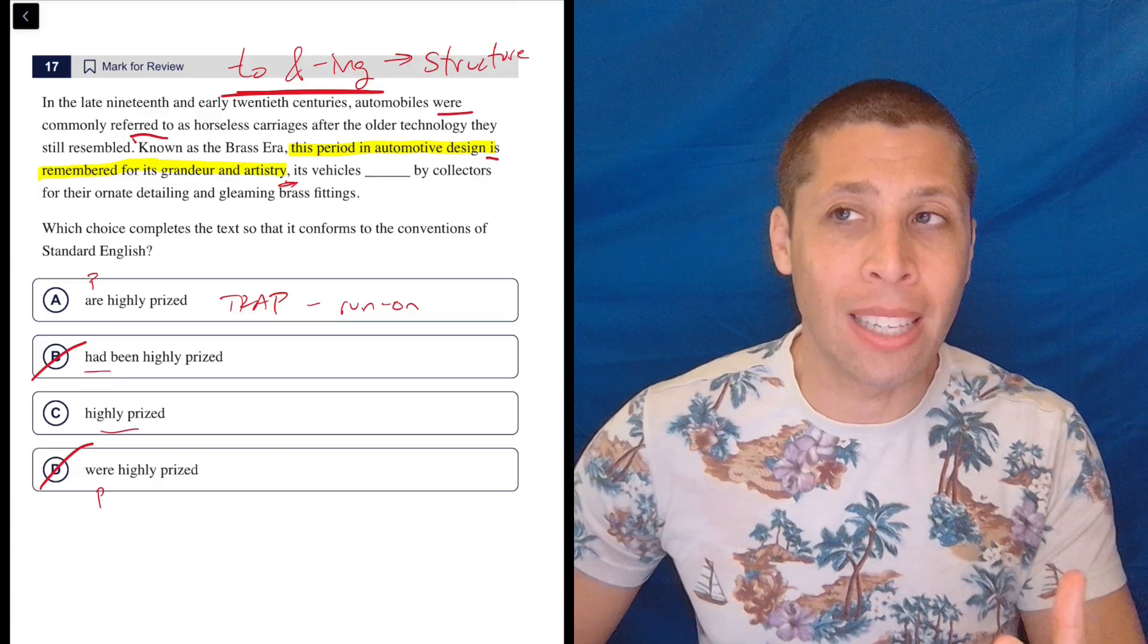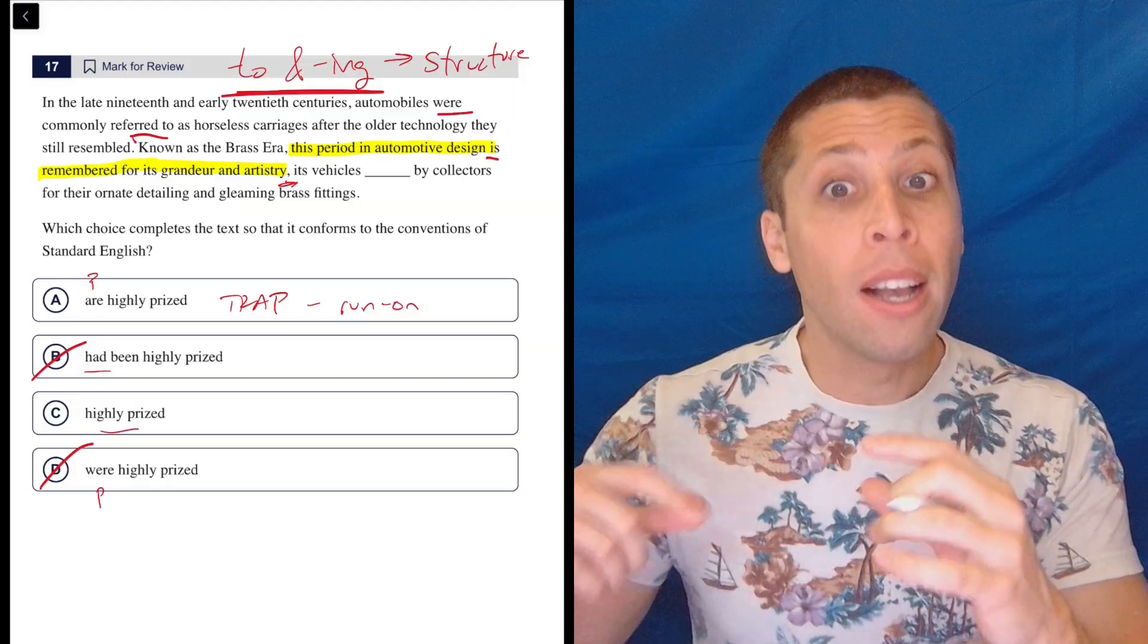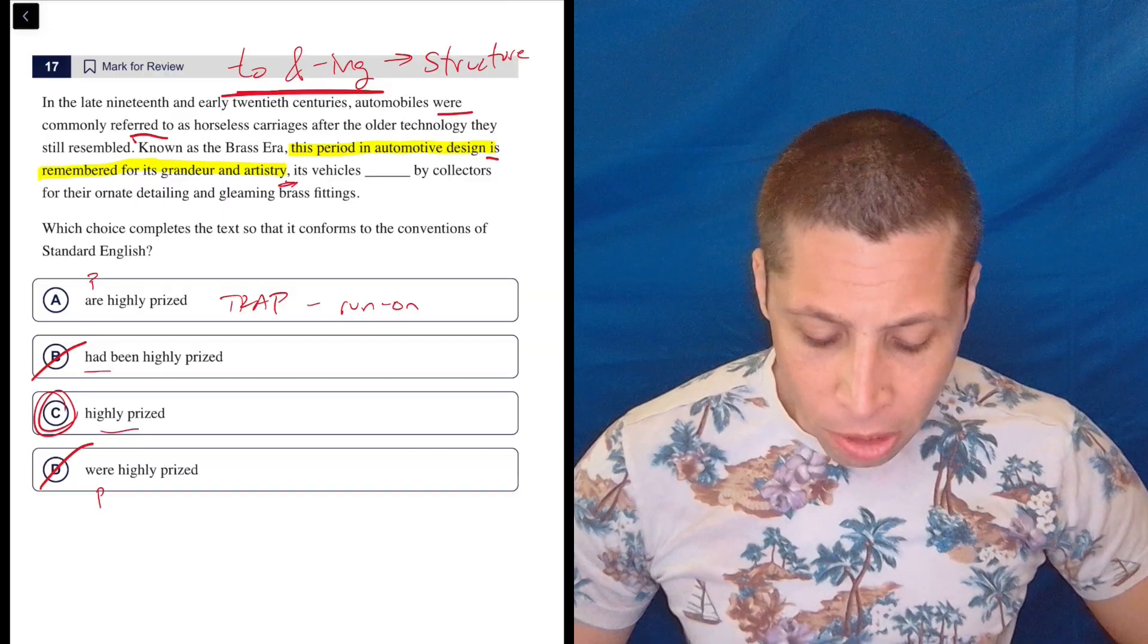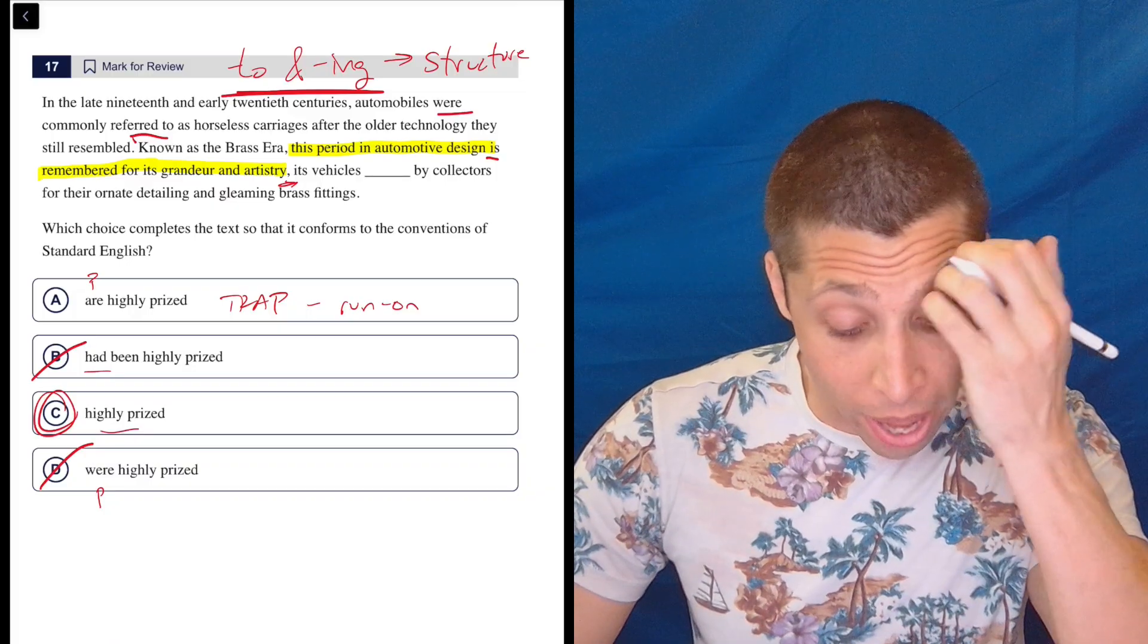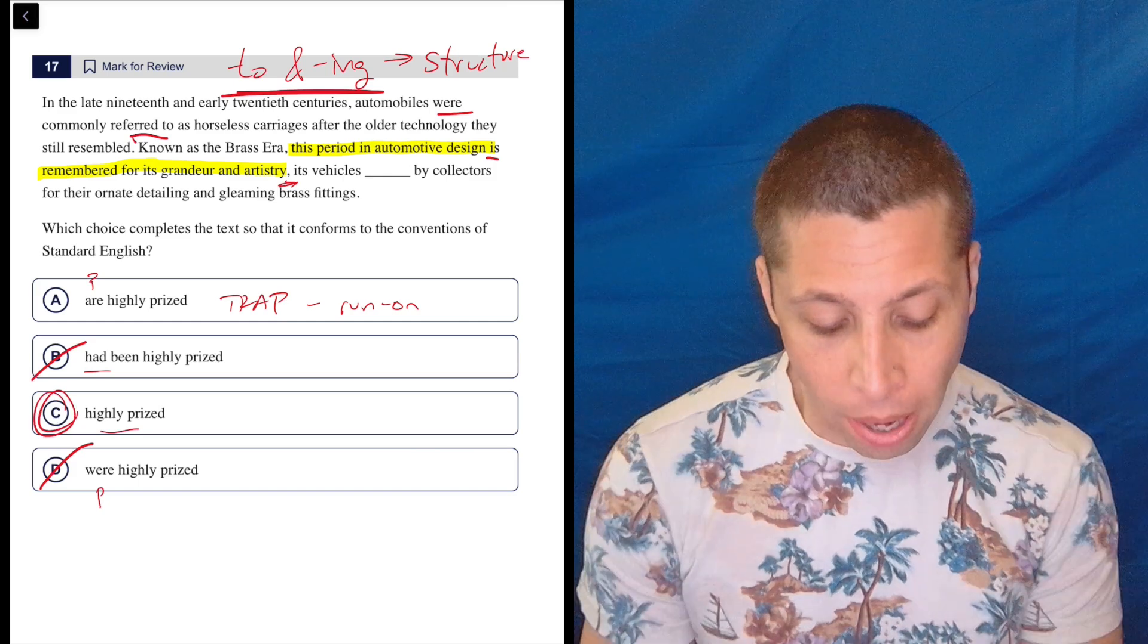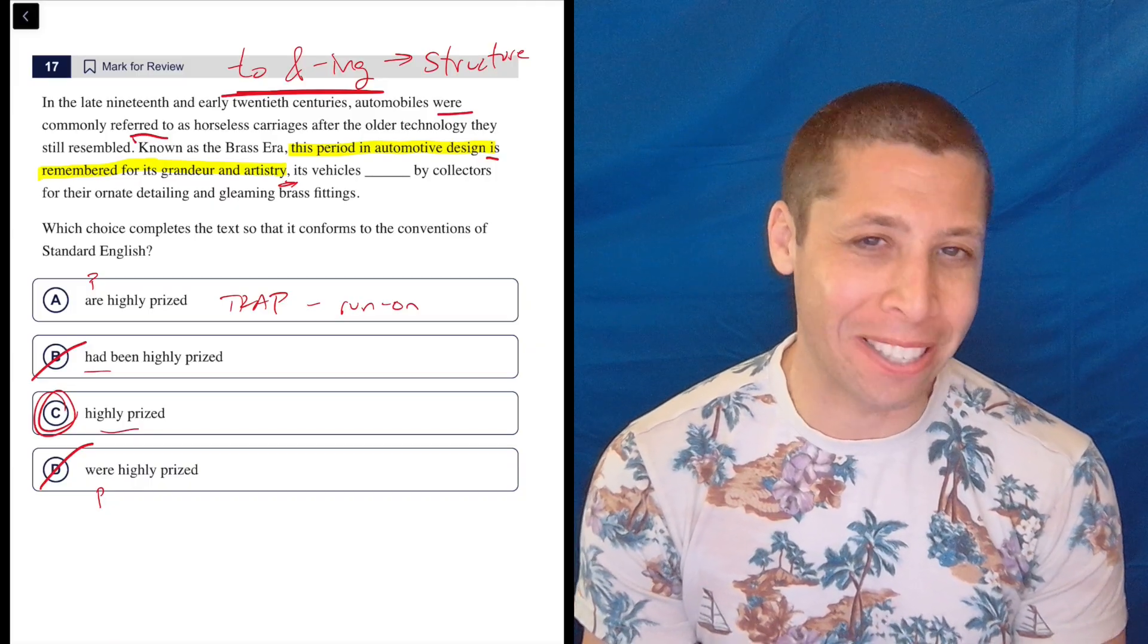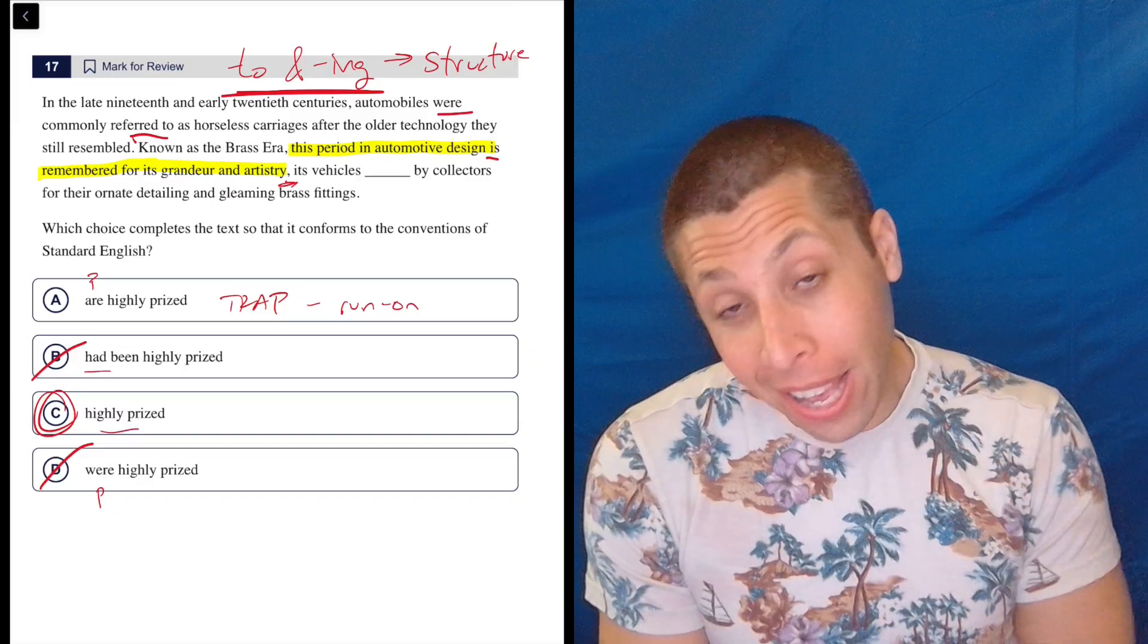And that's the hardest thing with this to and ing rule and why even the name isn't that great. It's so hard to recognize. The reason I call it the to and ing rule is most of the time when they're testing sentence structure using verbs, one of the verbs will have a to, one of the verbs will have an ing and will start to get on that train of thought. But this is evidence that there are exceptions and this is really sneaky. The answer is C because basically we're not even talking about verbs anymore. This is kind of just becoming an adjective in a way - it's describing the vehicles. It's so sneaky, but basically if we put C in there, 'its vehicles highly prized by collectors for their ornate detailing and gleaming brass fittings,' it's no longer a sentence. Now it's a very filled out but still not complete clause. It's an extra clause. And so now we're allowed to attach it with a comma.